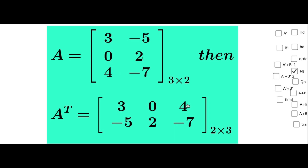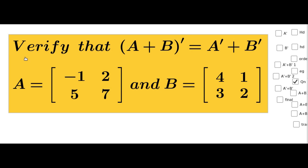We will verify the property: A plus B whole transpose equals Aᵀ plus Bᵀ, where A equals the matrix minus 1, 2, 5, 7 and B equals the matrix 4, 1, 3, 2. We need to find A plus B whole transpose on one side and Aᵀ plus Bᵀ on the other side, then show these matrices are equal.